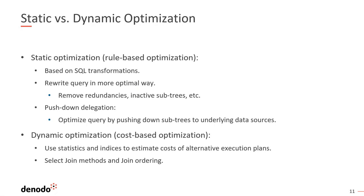Let's take a closer look at each of these techniques. Static optimization, also called rule-based optimization — those two things are synonymous — is based on SQL transformations. The idea is that we're going to rewrite the query in a more optimal way. Examples include removing redundancies, removing inactive subtrees, pushing down delegation wherever we can, and pushing down subtrees to the underlying sources. Dynamic optimization uses statistics and indexes to estimate cost, and is also used to select the correct join method and join ordering.